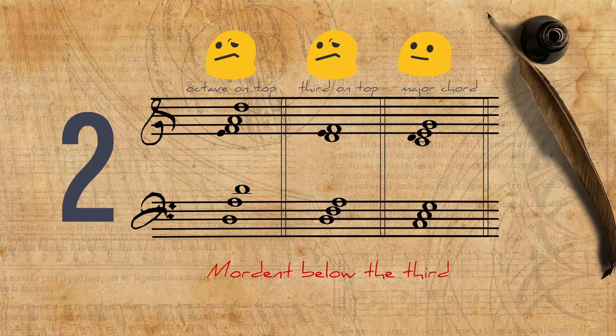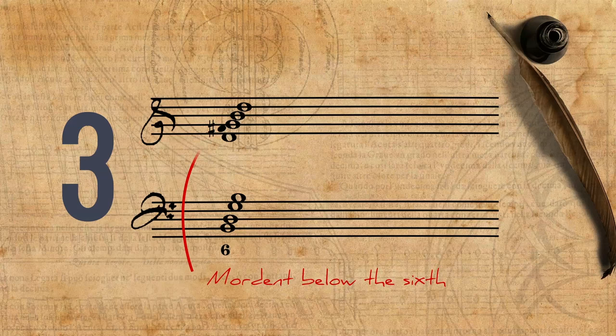Three, a mordent could be played below the sixth in a sixth chord, like so. Or similarly in a minor chord.